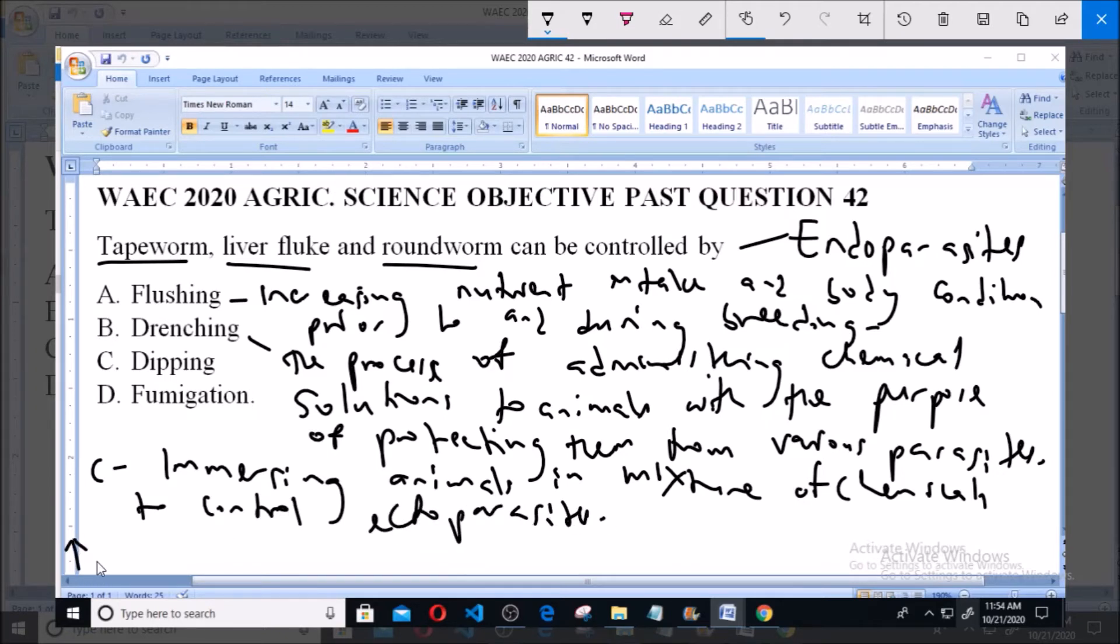And lastly option D, which is fumigation, refers to the general application of chemicals to the surroundings for the purpose of disinfection.